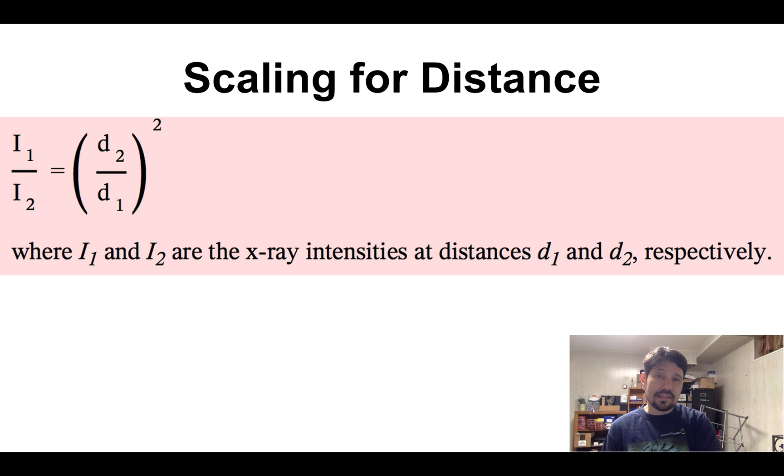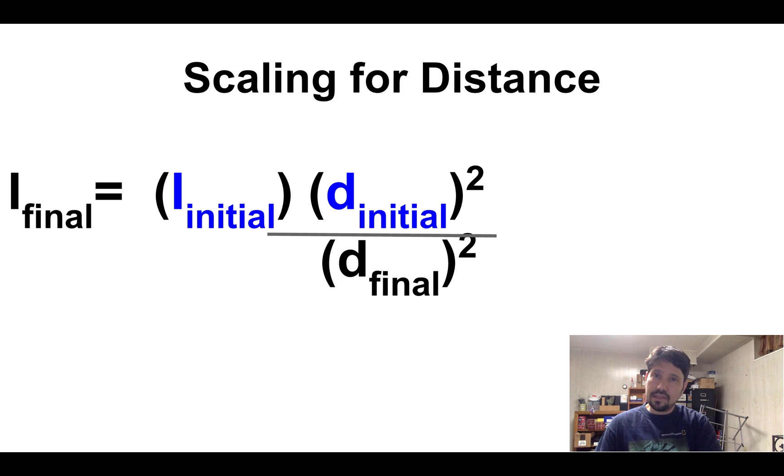You can do the same thing with distances where here's our formula for intensity versus distance. And instead, I can memorize this formula of intensity final is intensity initial times the ratio of the inverse of the distances squared.